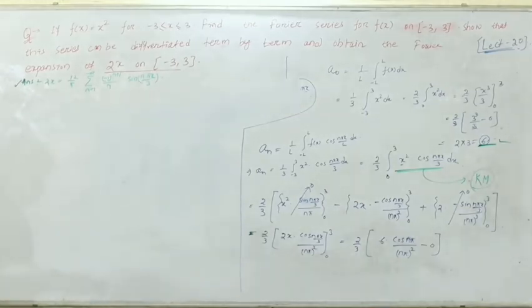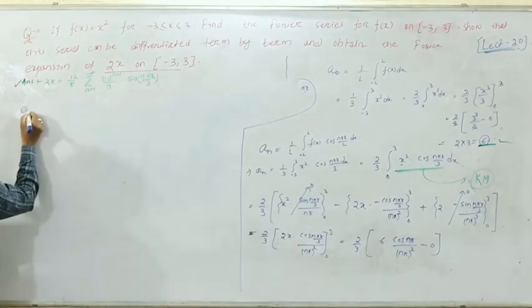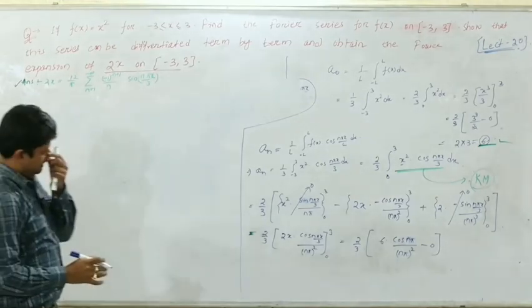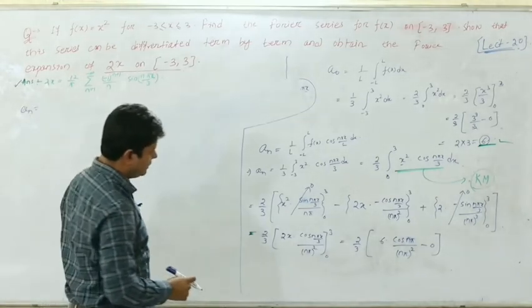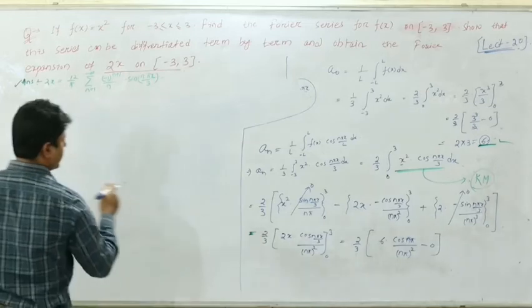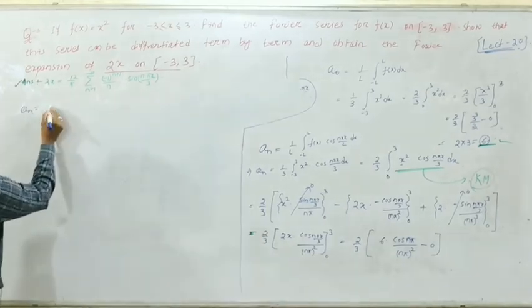So aₙ is now to be simplified. We have (2/3)·6·cos(nπ)/(nπ/3)².